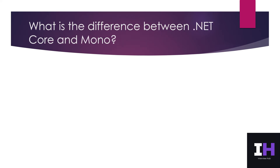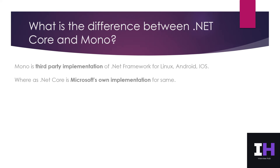Q7. What is the difference between .NET Core and Mono? Mono is a third-party implementation of .NET Framework for Linux, Android, and iOS, whereas .NET Core is Microsoft's own implementation for the same.